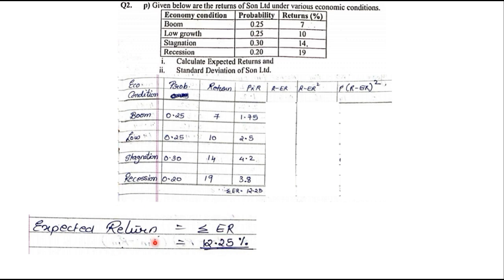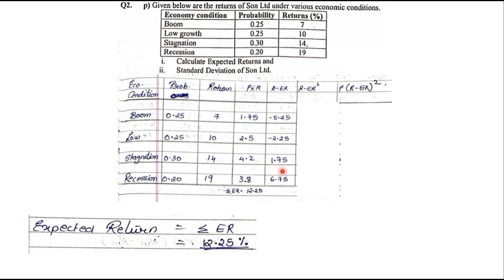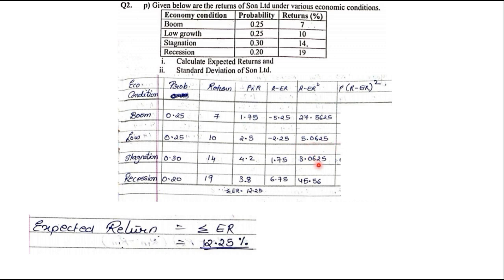Now we find the next column, R−ER, by subtracting the expected return from each return value: 7−12.25, 10−12.25, 14−12.25, and 19−12.25, giving us −5.25, −2.25, 1.75, and 6.75. Next we square these values: (−5.25)²=27.5625, (−2.25)²=5.0625, (1.75)²=3.0625, and (6.75)²=45.5625.